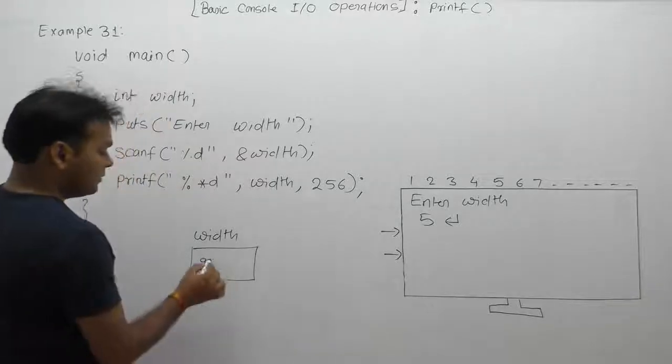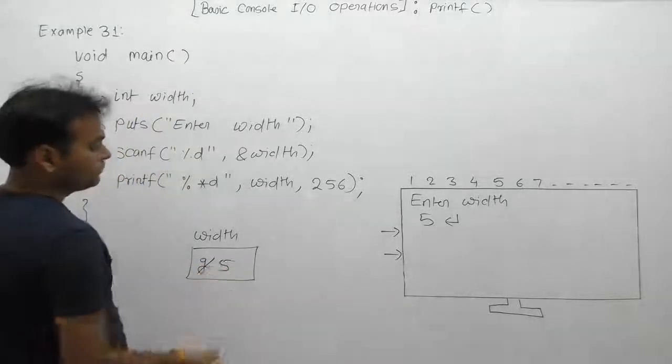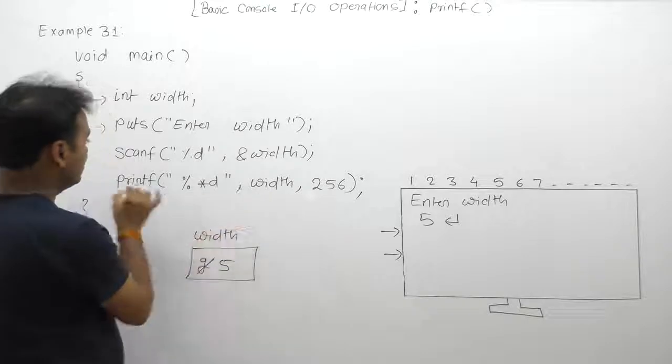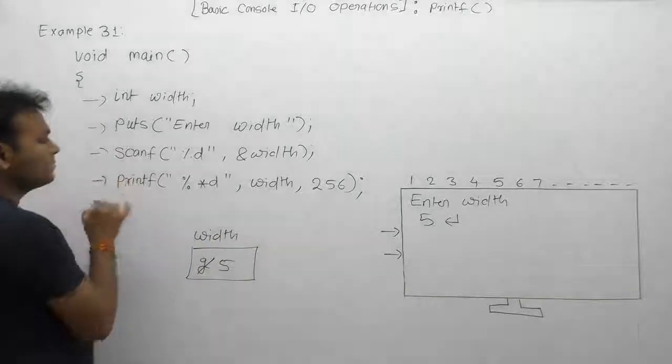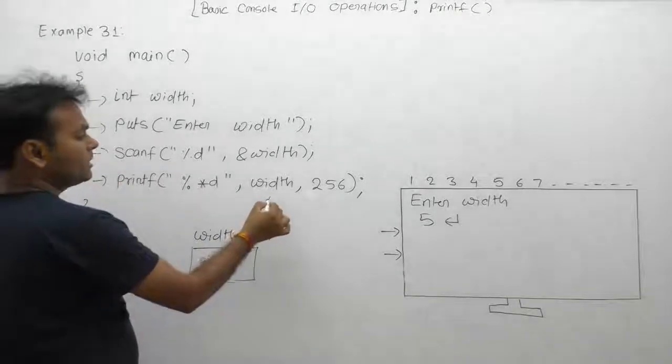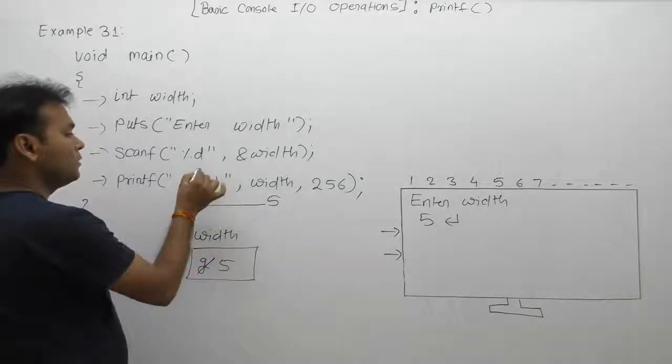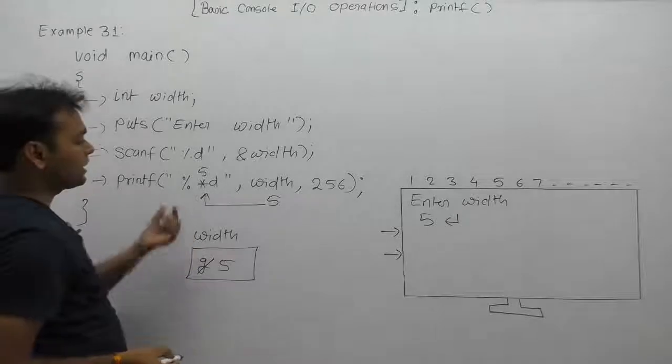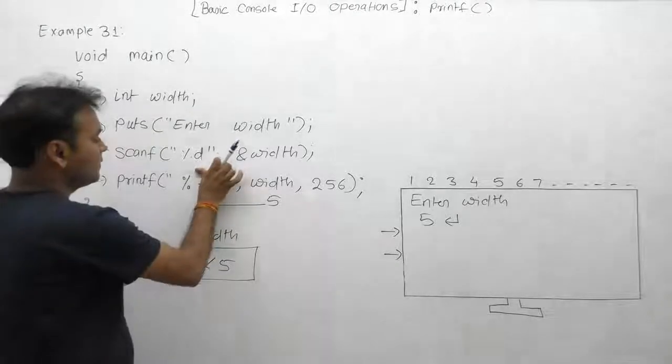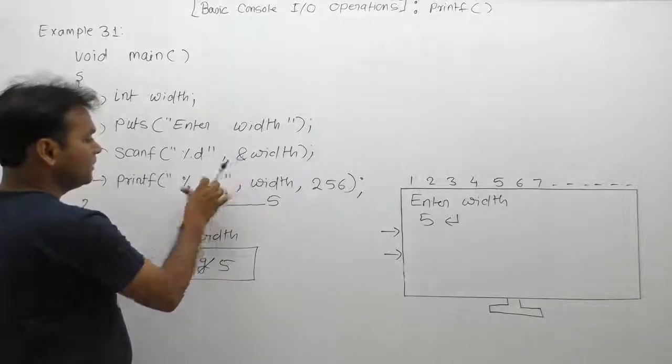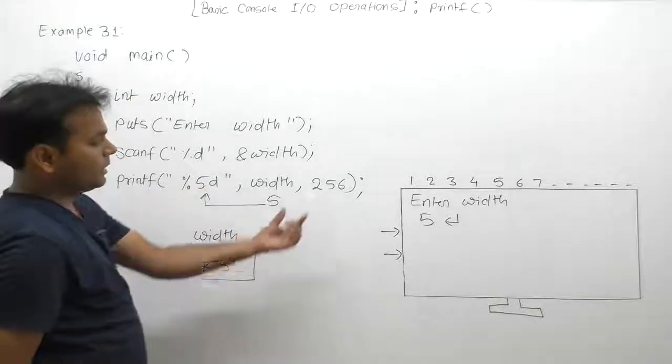The value of width becomes 5. Then in the next printf, the value of width is 5. Therefore, the star is replaced logically by 5, and it becomes like percent 5d (% 5d).